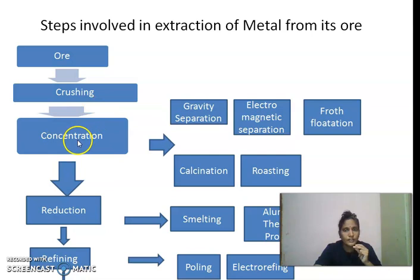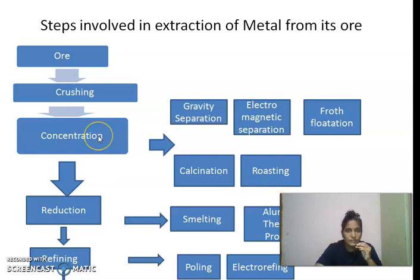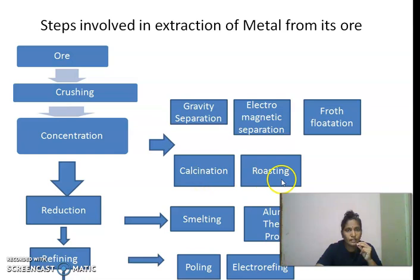After crushing, the next process is concentration. Concentration means increasing the percentage of ore while removing impurities — the gangue or matrix — from the ore. This is called concentration. Concentration is done by two methods: one is the physical concentration method and another is the chemical concentration method. Physical concentration is done by gravity separation, electromagnetic separation, and froth flotation method.